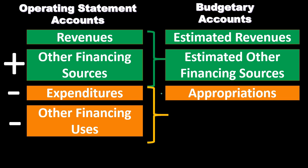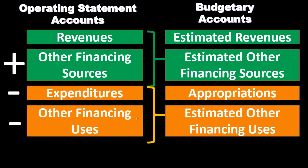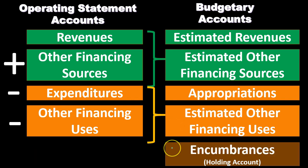Other financing uses act like expenditures, so the related budgetary account is estimated other financing uses, which carries a credit balance. Then we have encumbrances, which I place in their own category even though they fall under budgetary accounts. Think of encumbrances as a clearing account. They function as an interim step related to appropriations and will go up and down in a format distinct from the standard budgetary accounts.